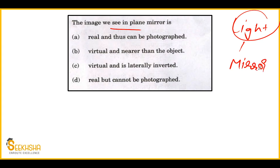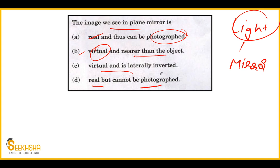In the light chapter, the concepts of plane mirror, concave mirror and convex mirror are very commonly asked. Generally the same questions appear. If you know the properties of the plane mirror, you can easily answer this. Option A: the image formed is real and you can photograph it. Option B: it is virtual and nearer than the object. Option C: virtual and laterally inverted. Option D: real but cannot be photographed. Option C is the correct answer, because the plane mirror forms a virtual and laterally inverted image.